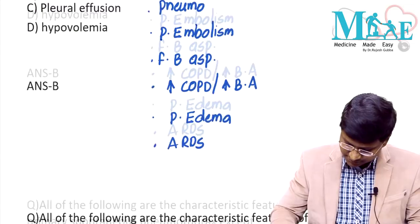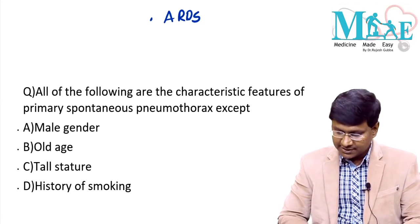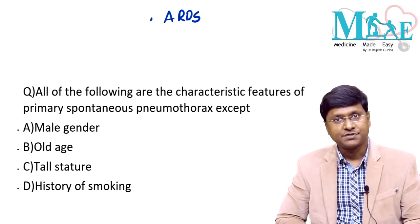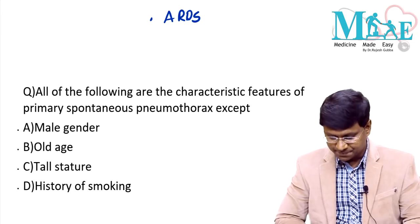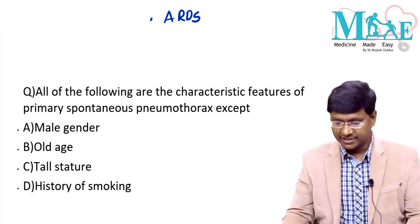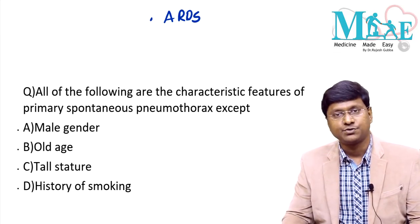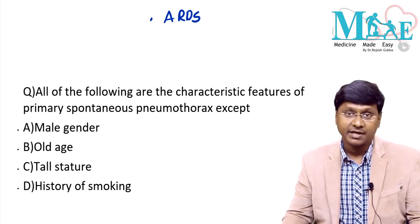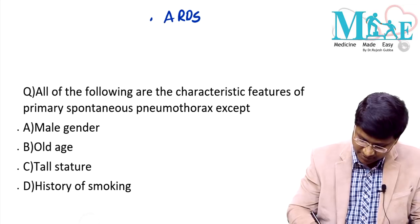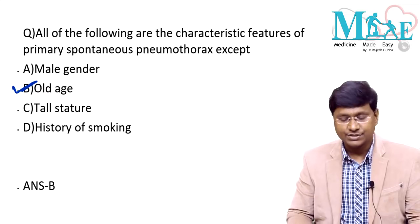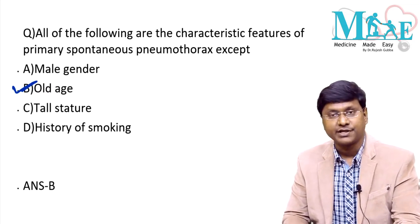Another question: all of the following are characteristic features of primary spontaneous pneumothorax except — male gender, old age, tall stature, history of smoking. We discussed primary spontaneous pneumothorax is seen in tall, thin male smokers. It is NOT associated with old age. So the answer is old age.